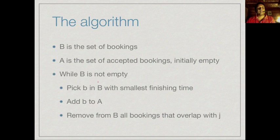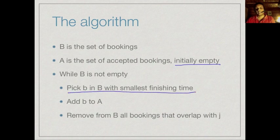Before proving it, let's formally write down the algorithm. We start with a set of bookings B and construct a subset A of accepted bookings, initially empty. So long as there are pending feasible bookings, we pick the booking with the smallest finishing time from B and add it to A. Having added it, we remove from B all bookings which overlap with the one just chosen. Each iteration we pick the next available booking with the smallest finishing time and remove everything in conflict with it.